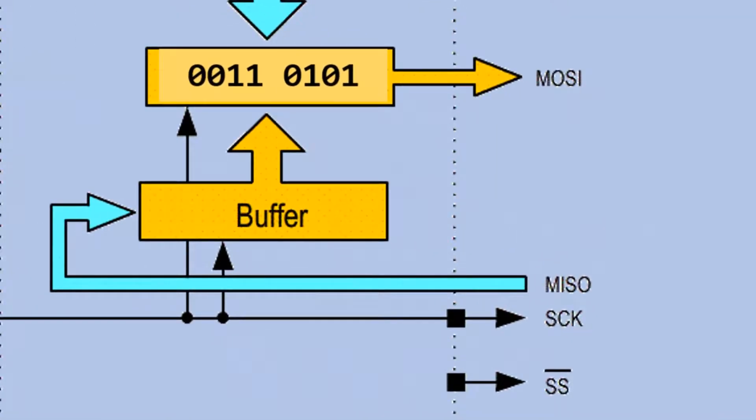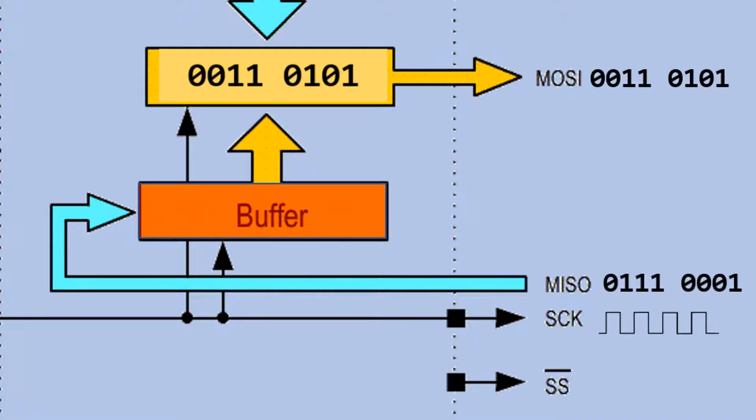Upon executing the instruction, the microcontroller initiates the clock signal and the data is sent out serially. At the same time, data from the slave arrives at the buffer register.